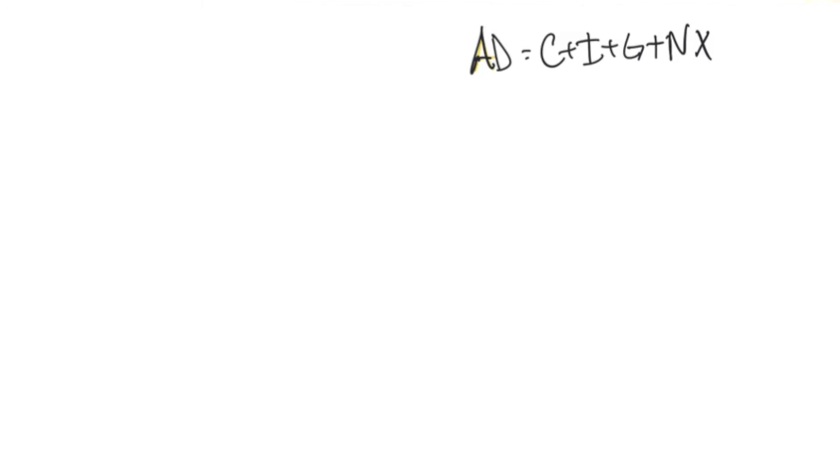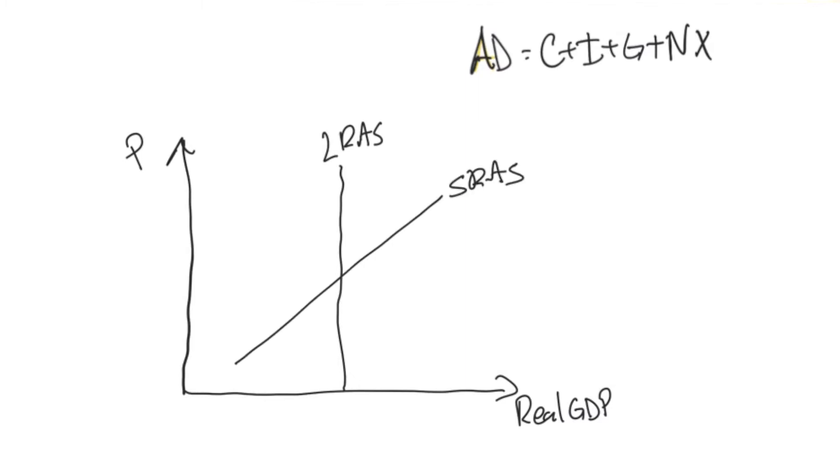So now let's go to our model. We have price levels on our Y axis, real GDP on our X axis. We know that long run aggregate supply curve is vertical. Short run aggregate supply curve is upward sloping. Aggregate demand is downward sloping.